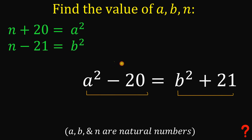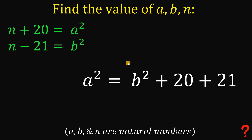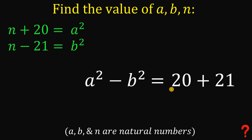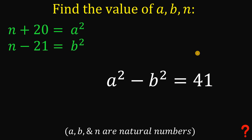From here, we add 20 to both sides and subtract b squared from both sides, putting all constants on the right and all variables on the left. This gives us a squared minus b squared equals 41. Note that 20 plus 21 equals 41.